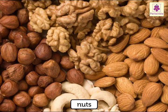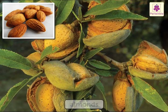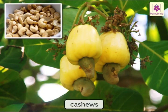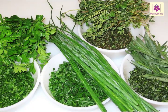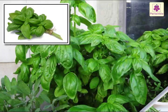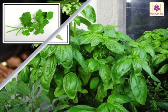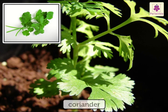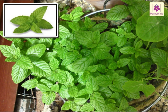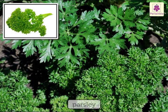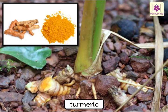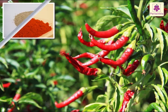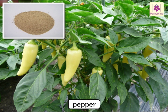We get nuts like almonds, cashews, and pistachios from plants. Plants also give us herbs like basil, coriander, mint, and parsley. We also get spices like turmeric, red chili, and pepper from plants.